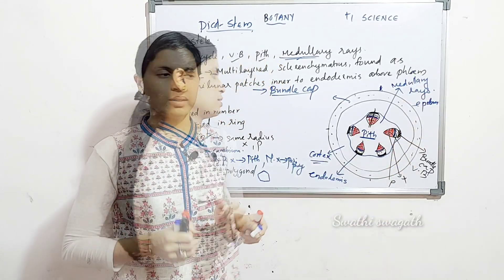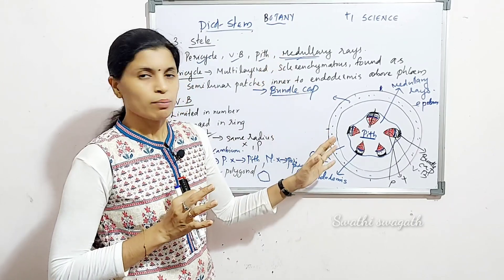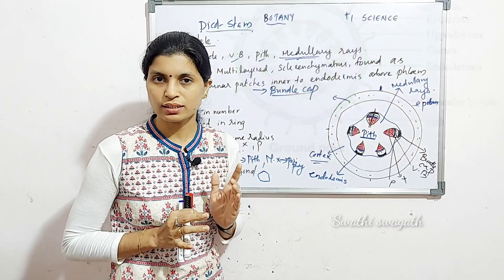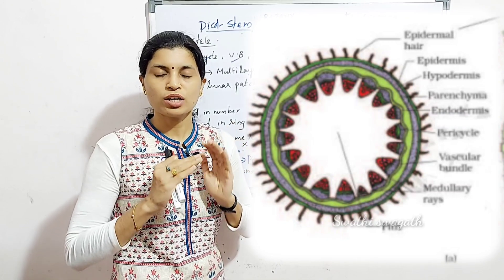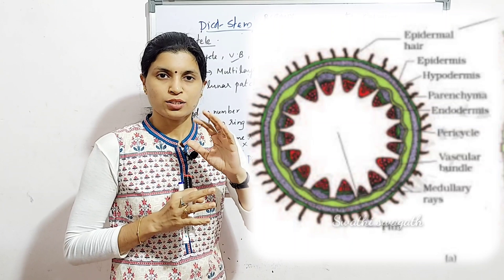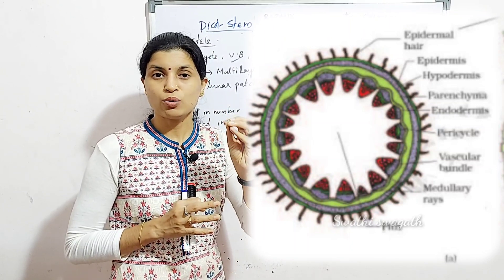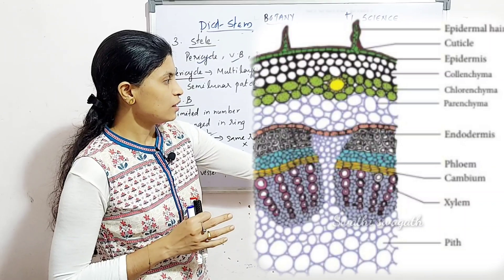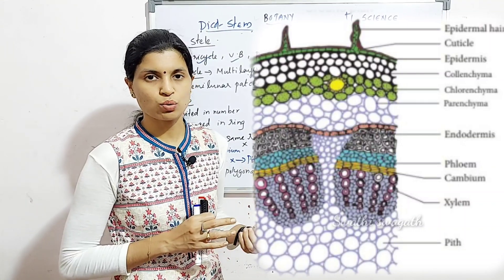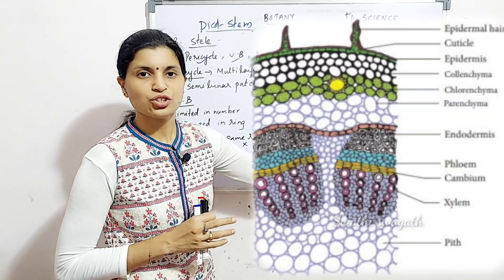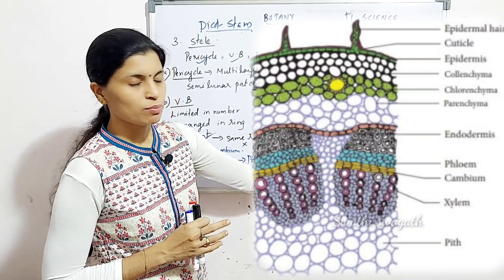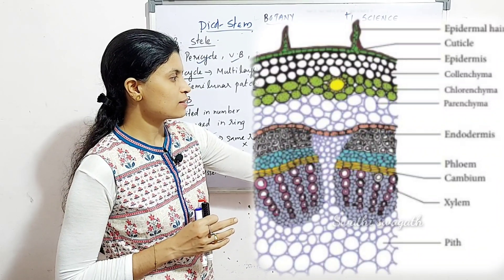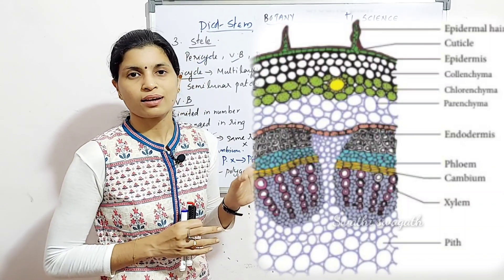The pith region also has medullary rays. To summarize the dicot stem: the outermost layer is epidermis, just below it is hypodermis, then general cortex, then endodermis, then pericycle which is sclerenchymatous in semi-lunar patches forming bundle caps above each vascular bundle. Vascular bundles are conjoint, open, limited in number, and arranged in a ring. The central pith is large and parenchymatous, with medullary rays of parenchyma cells between each vascular bundle.